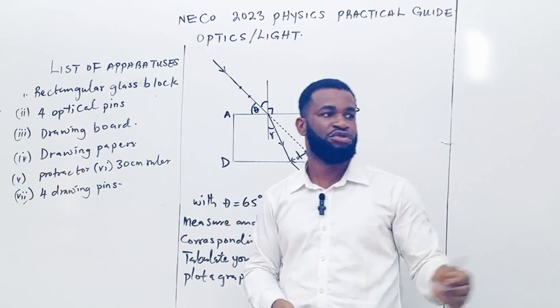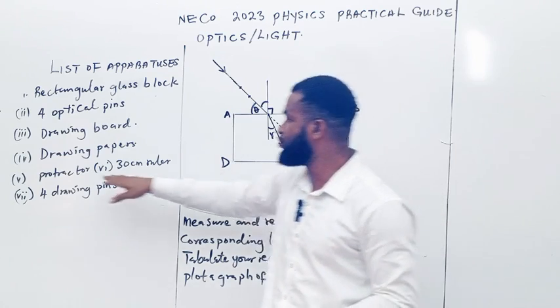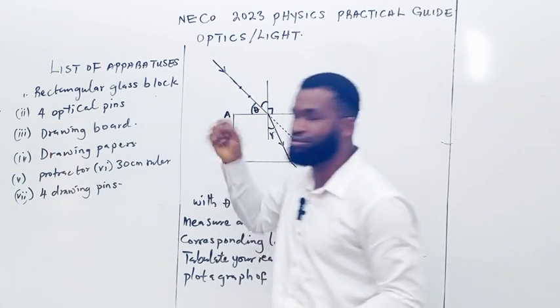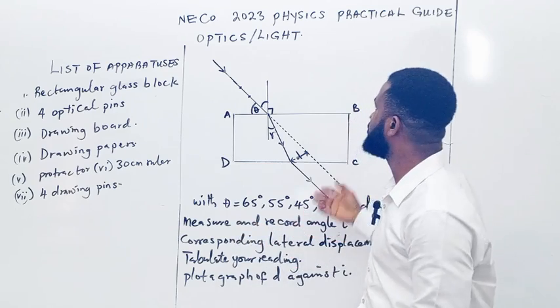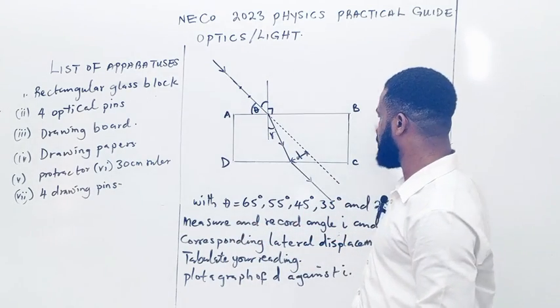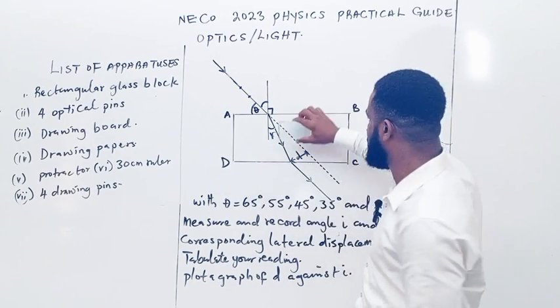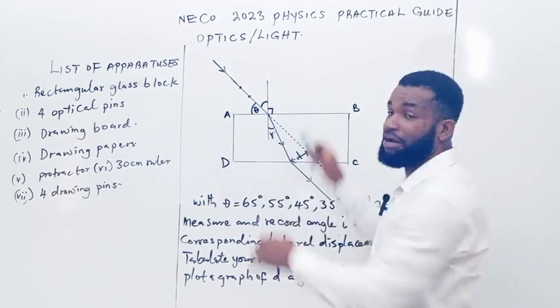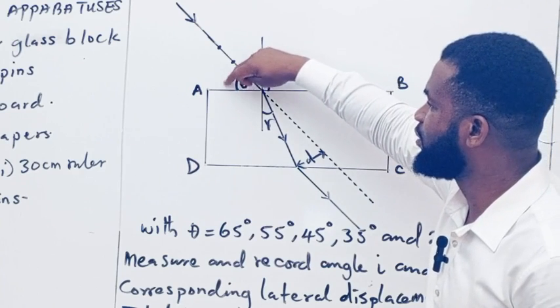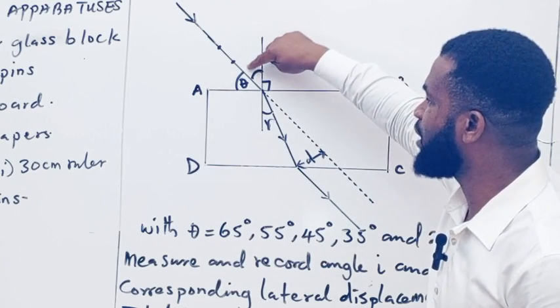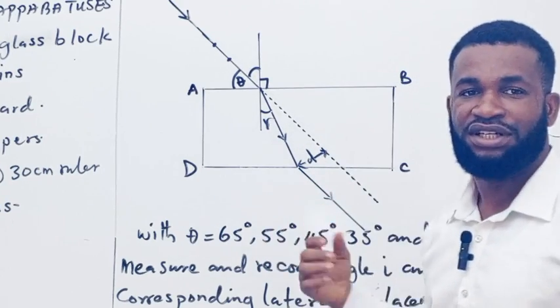The main things you need are the rectangular glass block prism, your protractor, and your ruler. You may not even need the board if you have a place to pierce through your paper. This is the diagram we are going to follow. When you place the rectangular block and trace it, this angle is the glancing angle. You can also find the incident angle.